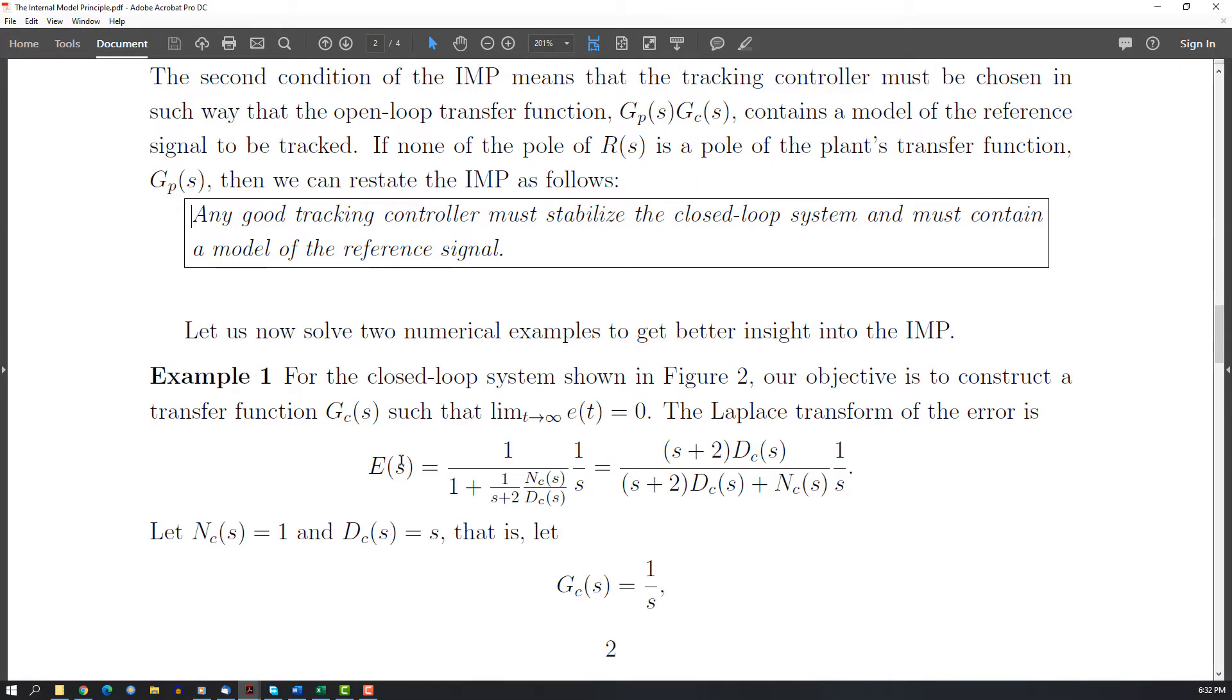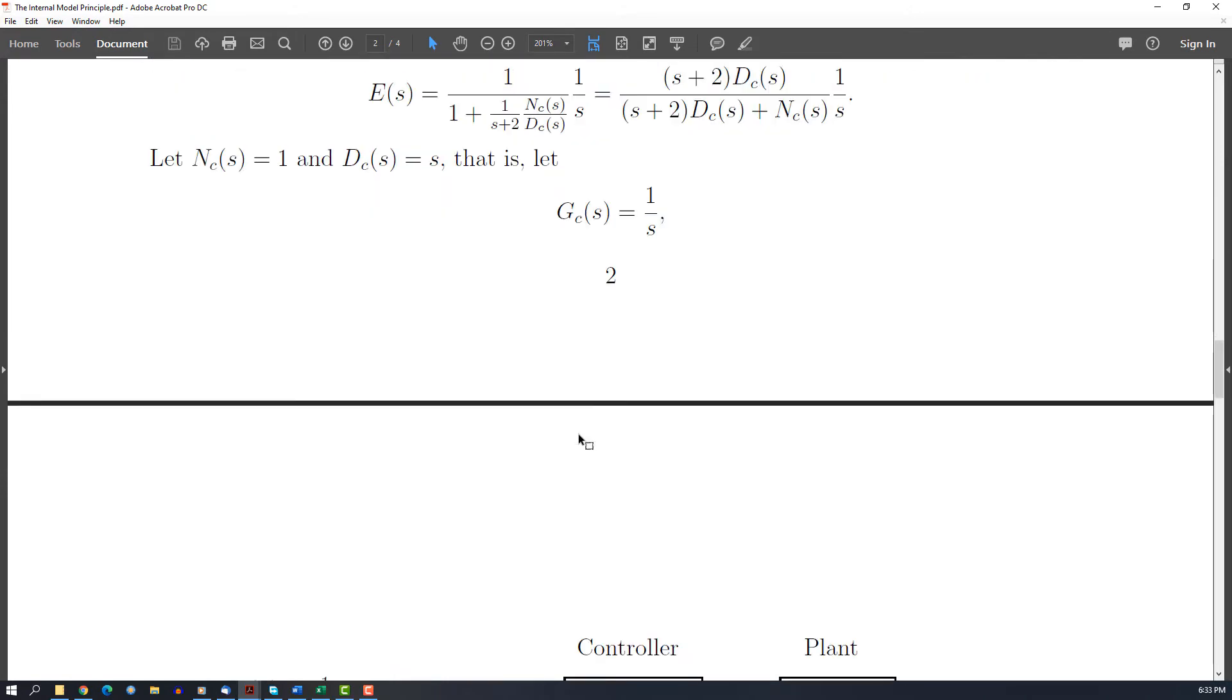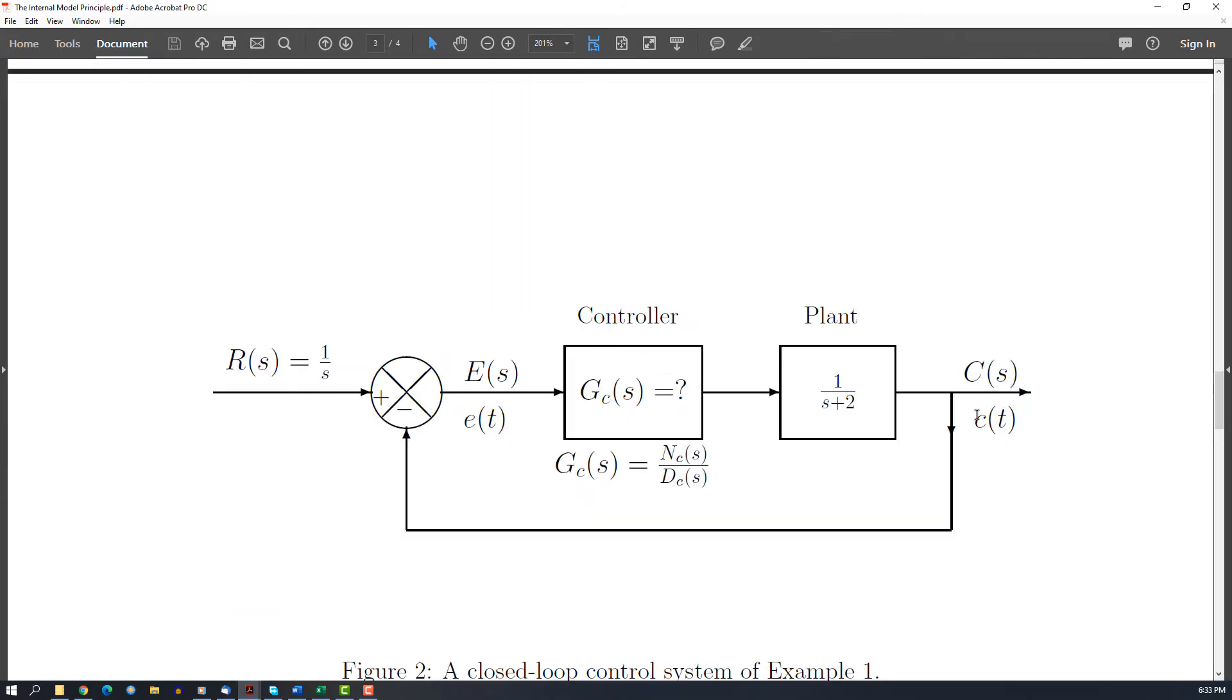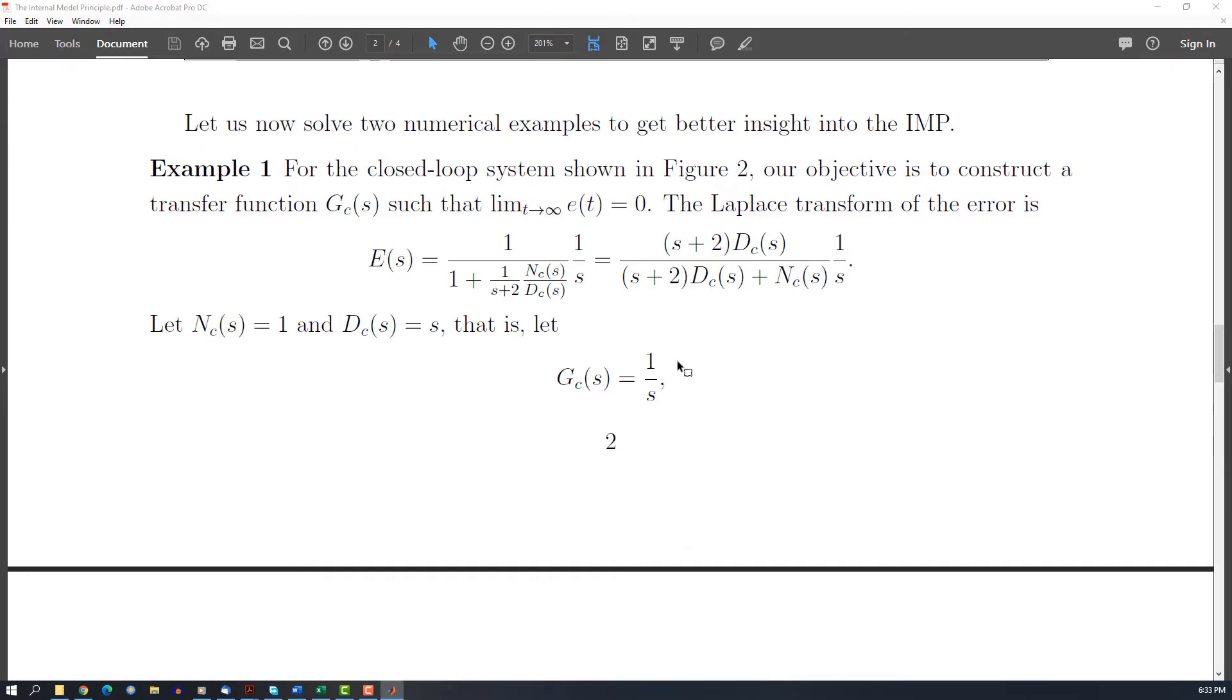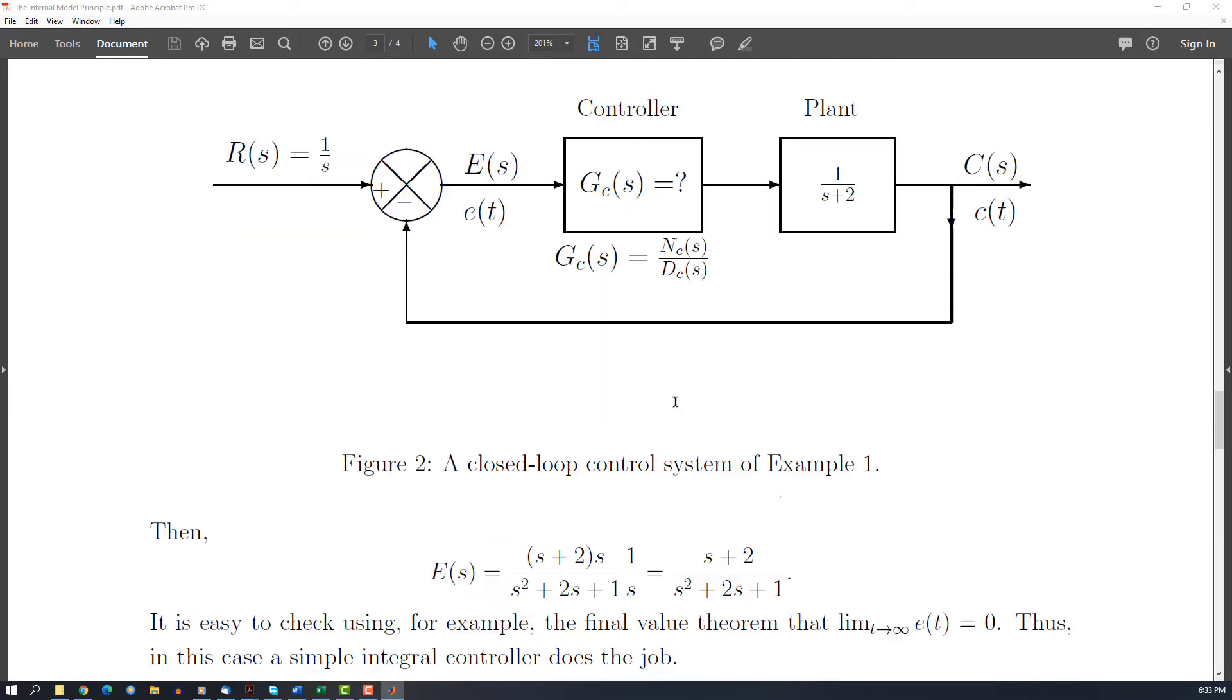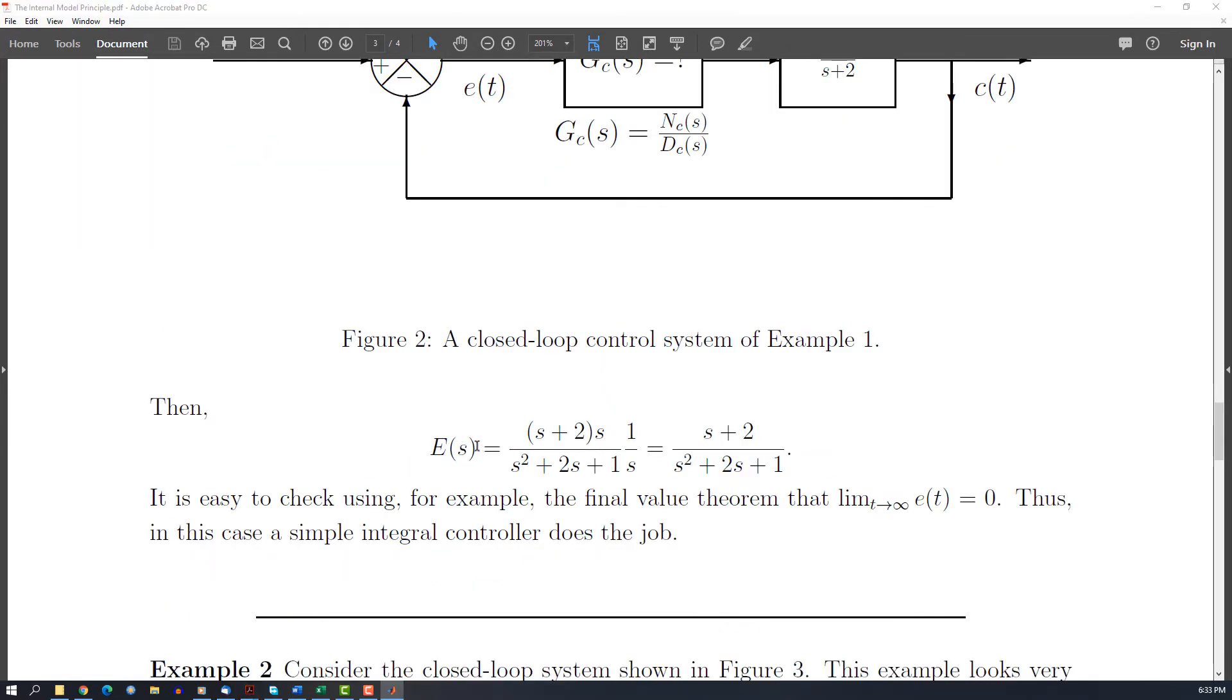So let's take a look at this example. The same structure you see here - you have the plant, you have a controller. Here we try the controller very simple, it's just an integral. So for the closed loop you have this one and it's clearly stable and perfect tracking.